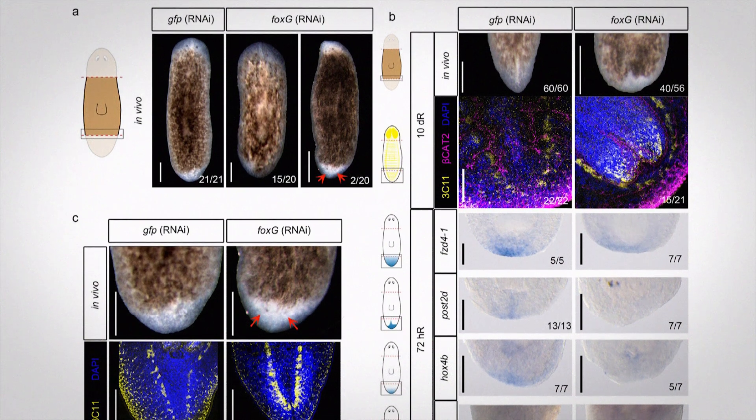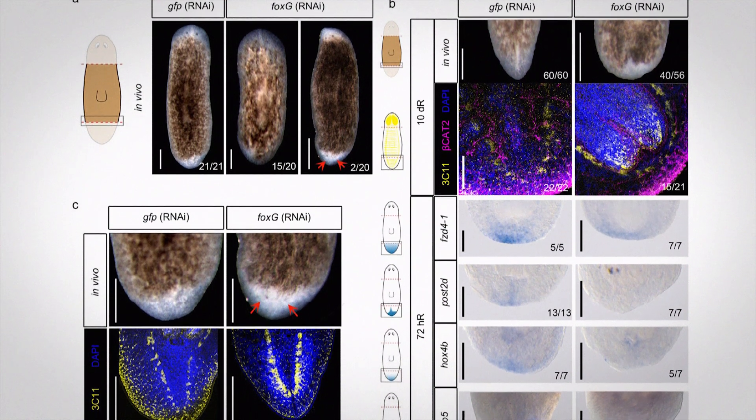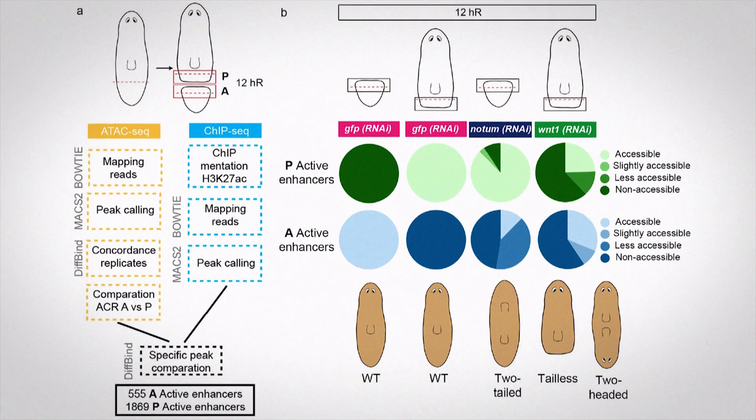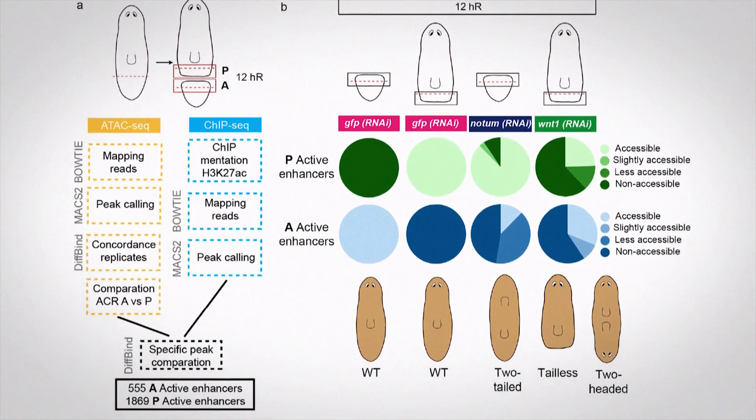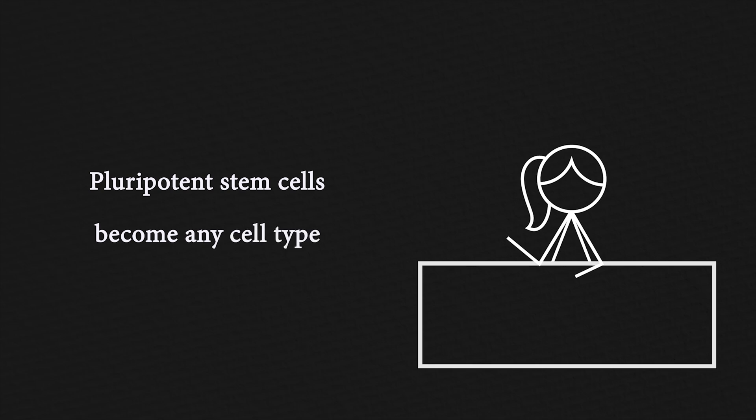Another study published in February this year studied in detail the mechanism by which a planarian knows which part of its body is missing and determines the type of tissue to be regenerated. The study suggests that in planarians, pluripotent stem cells play a key role in their remarkable regenerative abilities. After amputation, these cells have the potential to become any cell type depending on the signals they receive.